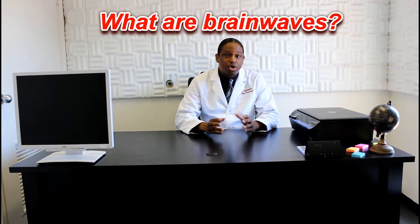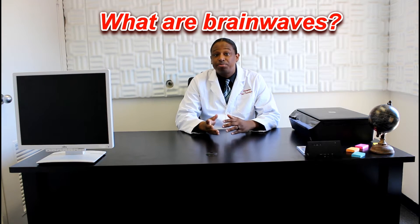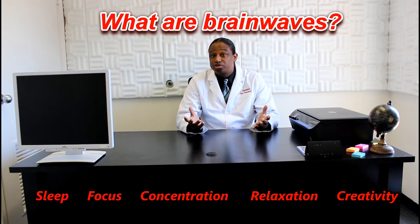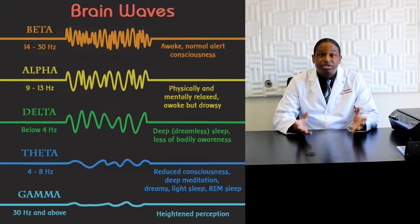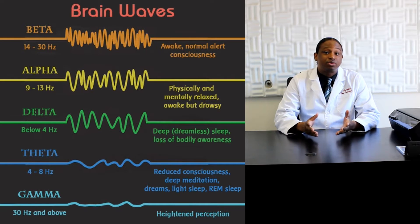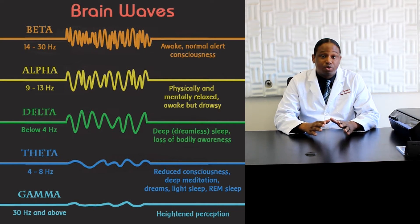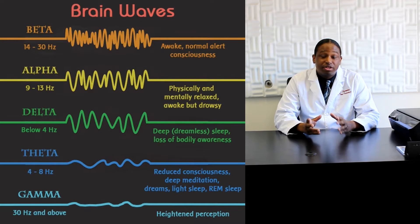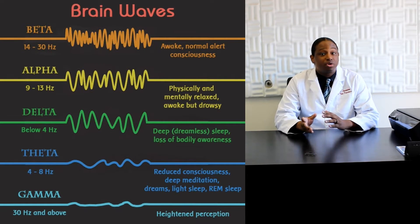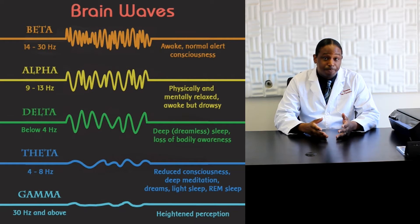Now, what is brain entrainment? To begin, let's start by understanding what brain waves are. We all experience different states of mind each day — states such as sleep, focus, concentration, relaxation, or creativity. Every state has a unique electrical signature that can be detected in the brain. With the discovery of brain waves came the discovery that electrical activity in the brain will change depending on what the person is doing.